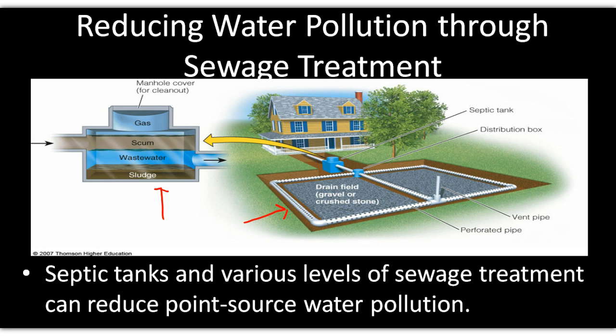In a septic tank, you've got three layers. You have a sludge layer, a middle layer, and then a scum layer, which is like your soaps and oils, which will float. This is a primary type treatment system in which you're separating materials, and bacteria are working on breaking down some of the organic material to produce this sludge. Occasionally, every three to five years, you've got to pump this out because it will eventually build up and end up going out into your field.